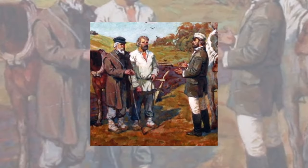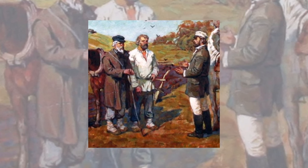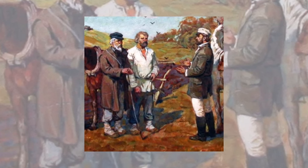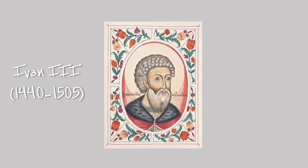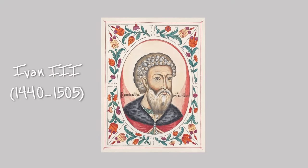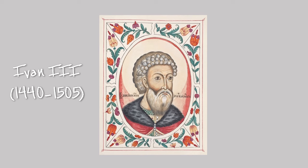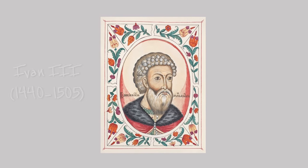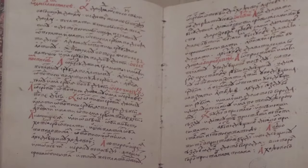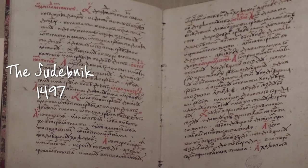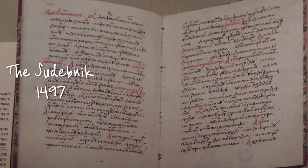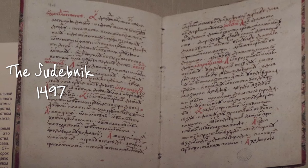Peasants were economically dependent on dvorians, but were free men who could change their landowner, choosing the best one. This freedom was a problem for Ivan III. Looking for better opportunities, peasants could migrate to other villages, leaving problematic territories. So Ivan III decided to limit peasants' freedom in his law, the Sudebnik of 1497. This document officially laid the foundation of serfdom in Russia.